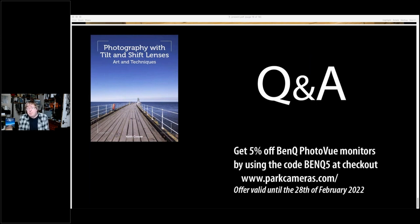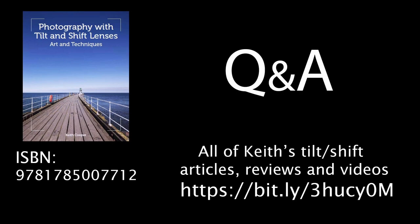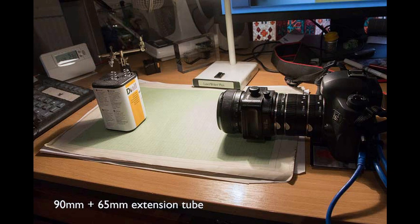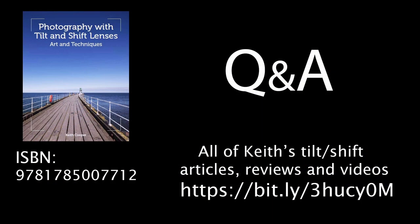Let's have a look at some of the questions. Can lenses be used with extension tubes? Yes, they can — I use them all the time. In particular, I have a Canon TSE 90 that I use with extension tubes, and that allows me to use it as a macro lens. Using extension tubes just allows you to focus closer; it doesn't give you much extra tilt. I've got some videos looking at this with examples of what difference it makes.